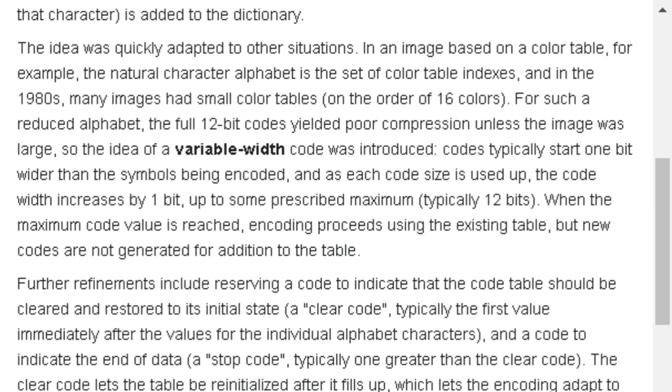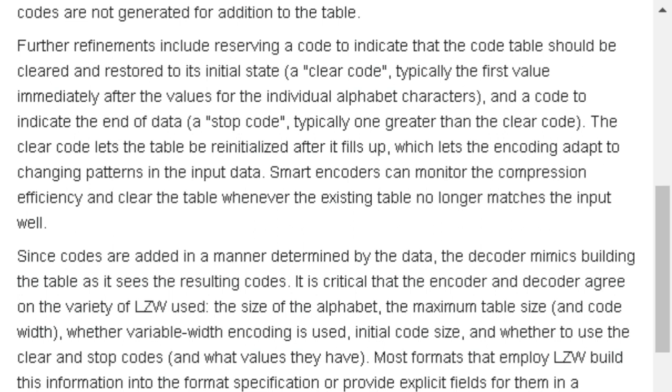Further refinements include reserving a code to indicate that the code table should be cleared and restored to its initial state, a clear code, typically the first value immediately after the values for the individual alphabet characters, and a code to indicate the end of data, a stop code, typically one greater than the clear code. The clear code lets the table be reinitialized after it fills up, which lets the encoding adapt to changing patterns in the input data. Smart encoders can monitor the compression efficiency and clear the table whenever the existing table no longer matches the input well.